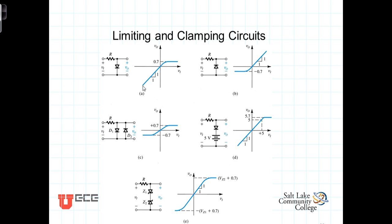So the transfer characteristic of this is V out equals V in up to the point that V in equals 7 tenths of a volt. At that point, conduction begins, and the voltage will go no greater than 7 tenths of a volt. So this diode is protecting the output voltage from getting anything greater than 7 tenths.